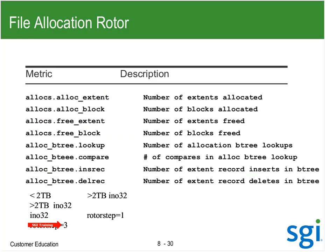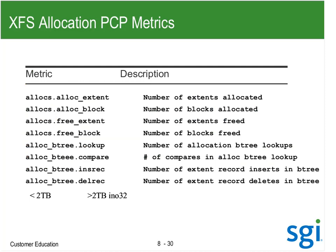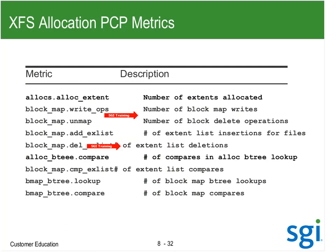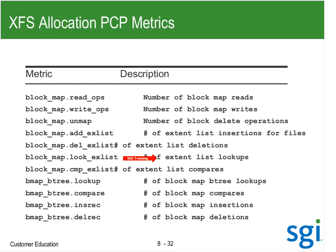We have file system allocation metrics: number of extents allocated, number of blocks, extents freed, blocks freed. Then B-tree lookups showing how much work I'm doing to find allocation space. There are also block map reads, writes, deletes, inserts, extentless deletions and compares, and block map B-tree lookups, compares, insertions, and deletes — though I don't generally use those. The relevant ones are number of bytes processed by the XFS daemon, number of contiguous buffers processed, and number of non-contiguous.